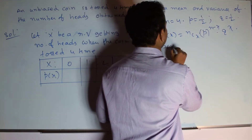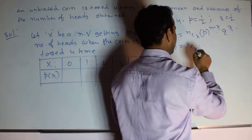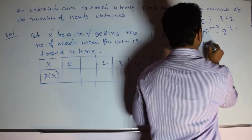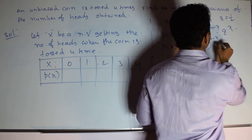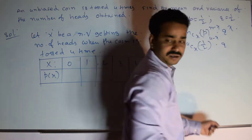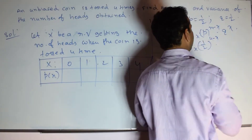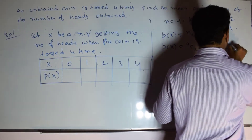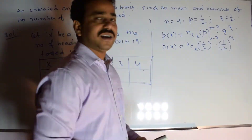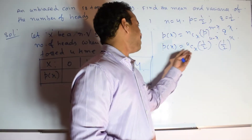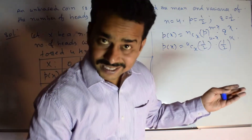Now let me substitute all the values. P(x) = 4Cx × (1/2)^(4−x) × (1/2)^x. At last, we are getting the function of x, meaning the probability for each value of random variable x. Now we will calculate the probabilities.